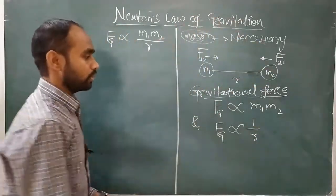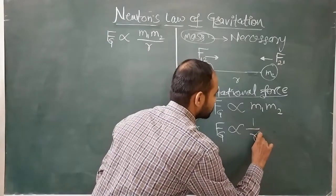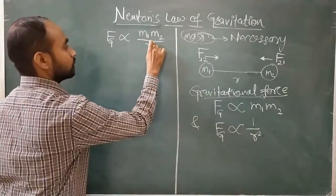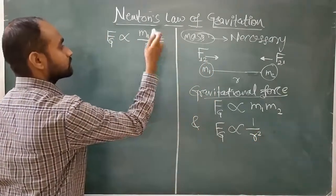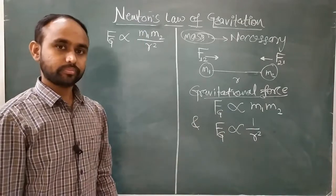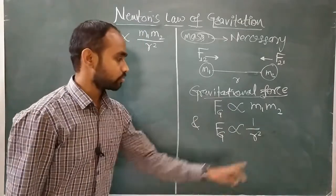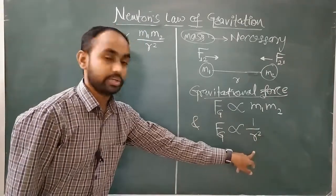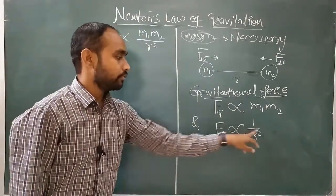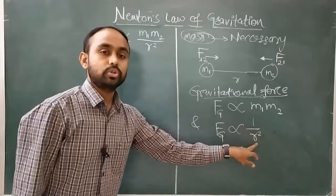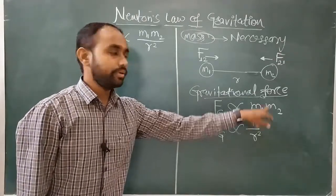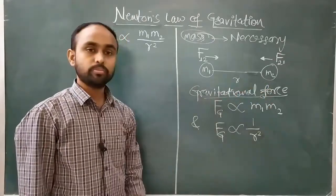Moreover, I should clarify - it is not only the separation, but the square of the separation. So we can say the gravitational force is inversely proportional to the square of the distance between those two bodies.